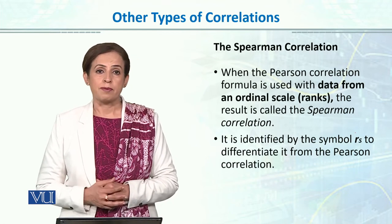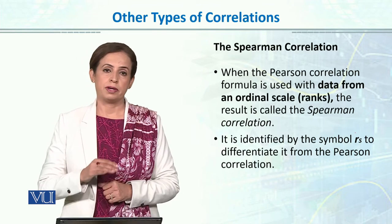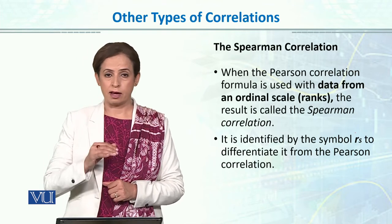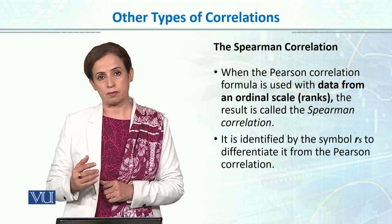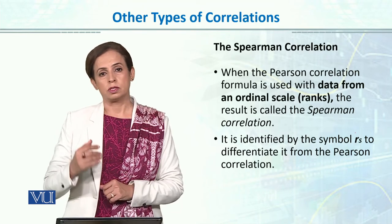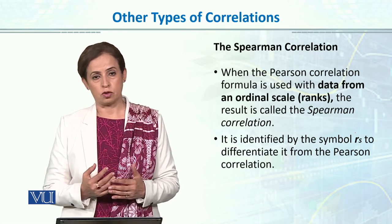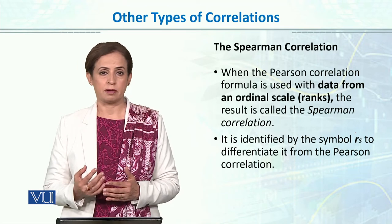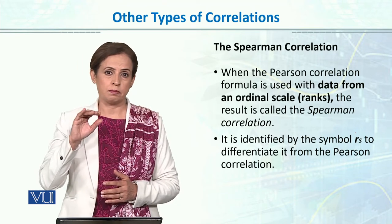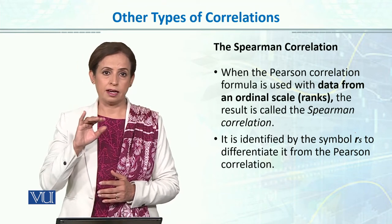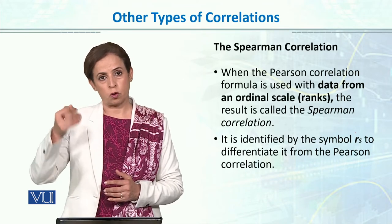The other type is the Spearman rank order correlation. When we have data in rank orders — ordinal data — Spearman correlation is a better method. It means we assign ranks to the data points and then find the correlation.